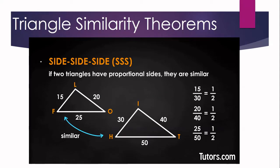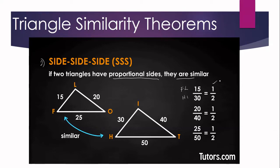Next, we have the SSS similarity theorem. If two triangles have proportional sides, then the triangles are similar. So if the corresponding sides of two triangles have equal ratios, the triangles are similar. We have FL corresponding to HI — FL is 15 and HI is 30 — so 15 over 30 gives a ratio of 1 over 2.